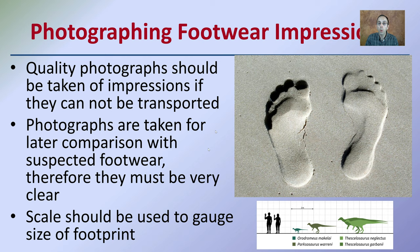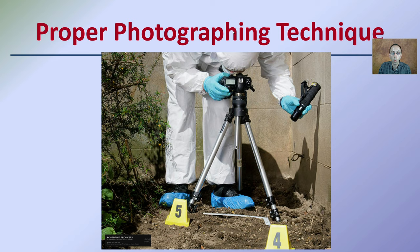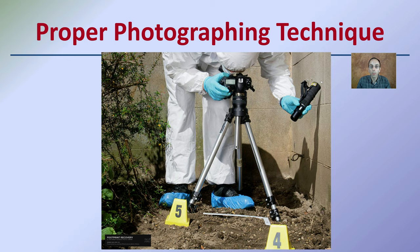Quality photographs are important and should be taken of impressions if they cannot be transported. Those photos can be taken for later comparison with suspect footwear, so they must be very clear. Scales should be used to gauge the size of the footprint, as that can help act as potential class evidence. Here we can see the proper photograph technique: an alternate light source going straight vertically down on the print, the camera on a tripod for a steady photograph, and the photographer wearing protective equipment and covering the soles of their shoes to eliminate any confounding footprints.